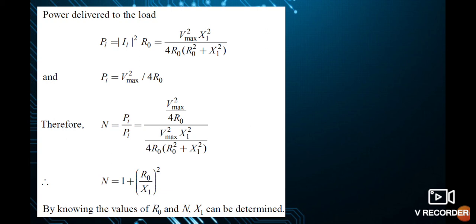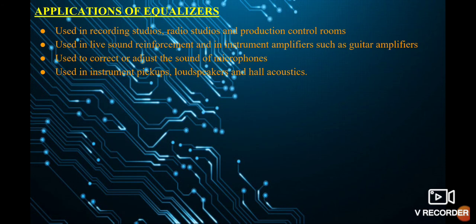This is the basic equation for a shunt equalizer. The key difference to remember is that the reactance of a series equalizer is twice the value of X1 (i.e., 2X1), while for a shunt equalizer it is half the value (X1/2). In the shunt equalizer, the source current splits into load current and a current through the X1/2 branch.